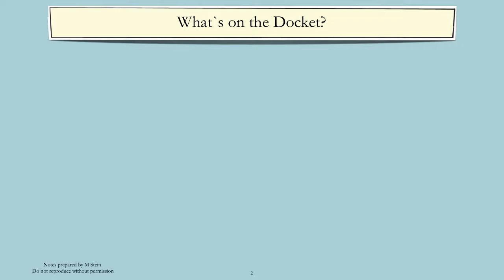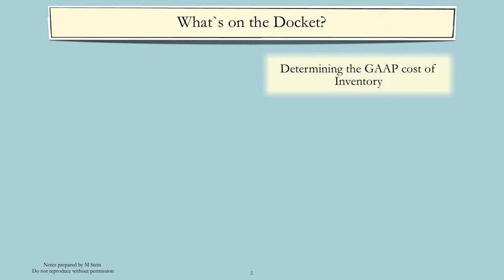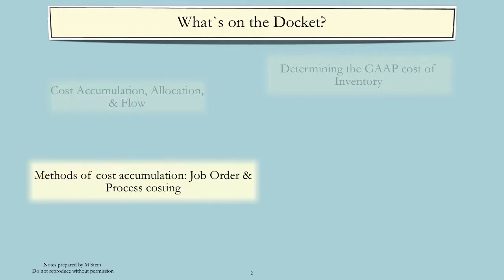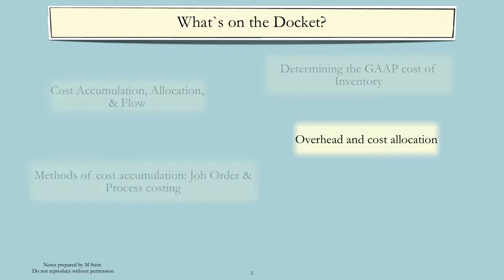Product costing is the process of determining the valuation of inventory and cost of goods sold. It involves a number of steps and decisions, which include determining the GAAP cost of inventory, cost accumulation, allocation, and cost flow, methods of cost accumulation — in particular job order costing and process costing — overhead, and cost allocation.